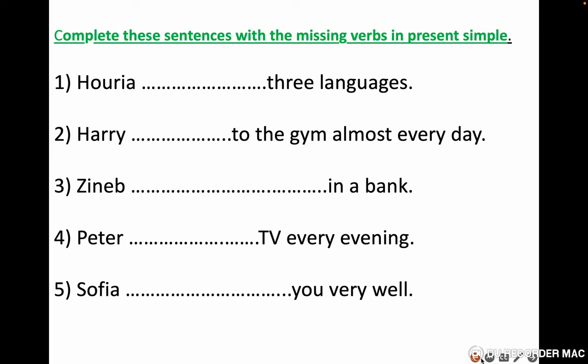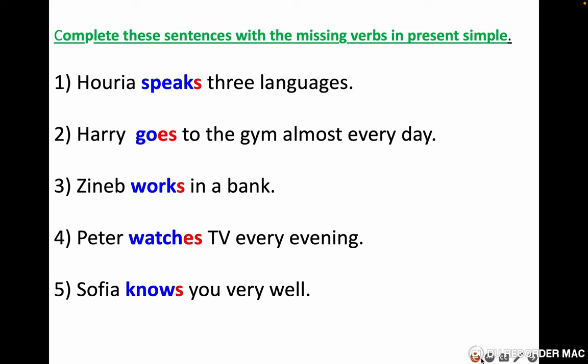Complete these sentences with the missing verbs in present simple. Huria speaks three languages — because with languages we use the verb 'speak'. Harry goes to the gym almost every day — 'almost' means nearly. Zineb works in a bank. Betty watches TV every evening. Sofia knows you very well — also, Sofia helps you very well.